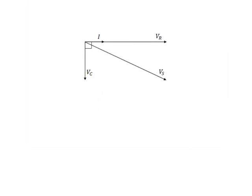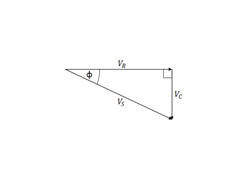The vector addition can be performed by applying Pythagoras' theorem. The result gives the magnitude of the supply voltage: V supply squared equals VC squared plus VR squared. Like all vectors, the supply voltage has both size and direction. The direction may be defined by applying trigonometry: tangent of phi is equal to VC over VR.